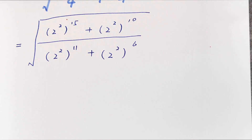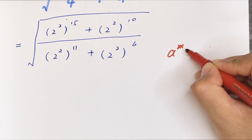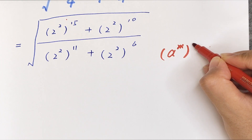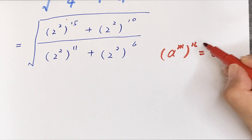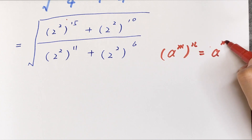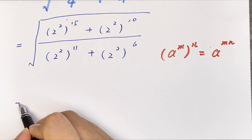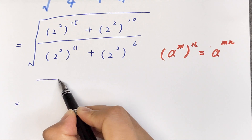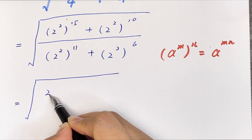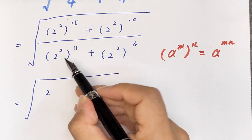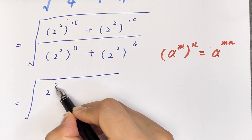Now we apply the formula: (a to the power of m) to the power of n equals a to the power of m times n. So in the numerator: 2 to the power of 2×15 equals 2 to the power of 30, plus 2 to the power of 2×10 equals 2 to the power of 20.